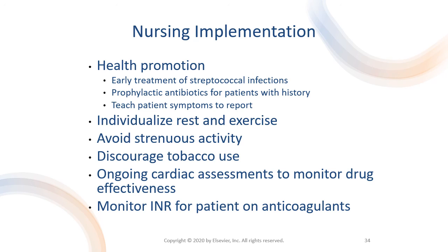Teach the patient with a history of rheumatic fever, infective endocarditis, or congenital heart disease the symptoms of valvular heart disease to report. In acute and ambulatory care, the patient with progressive valvular heart disease may need outpatient care or hospitalization to manage heart failure, infective endocarditis, embolic disease, or dysrhythmias. Heart failure is the most common reason for ongoing medical care. Design activities that can increase cardiac tolerance, but limit activities that cause fatigue and dyspnea. Tell the patient to avoid strenuous physical exercise because damaged valves may not handle the increased cardiac output demand.